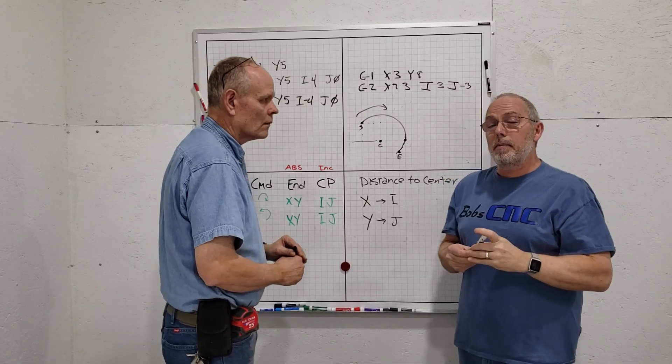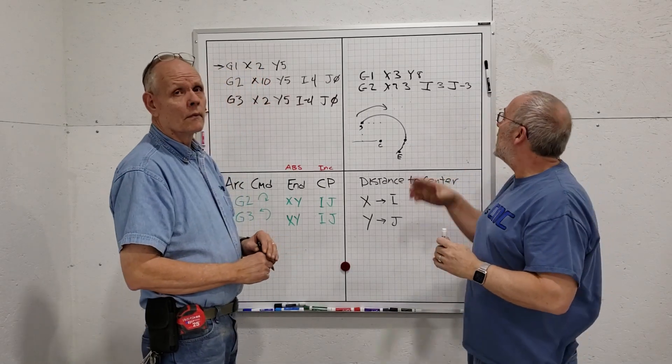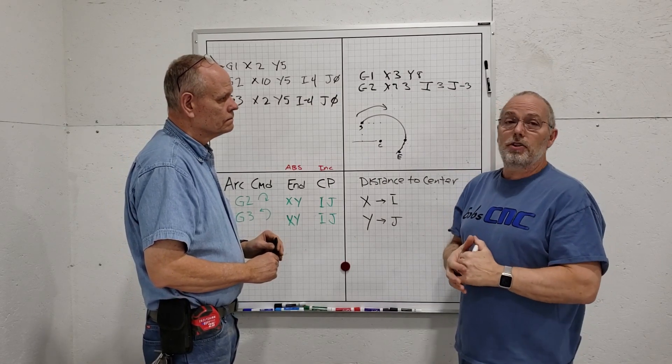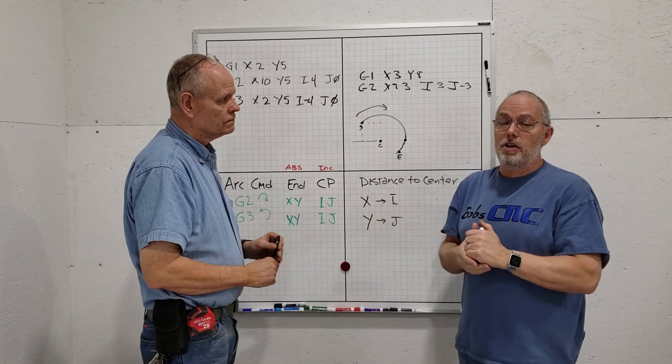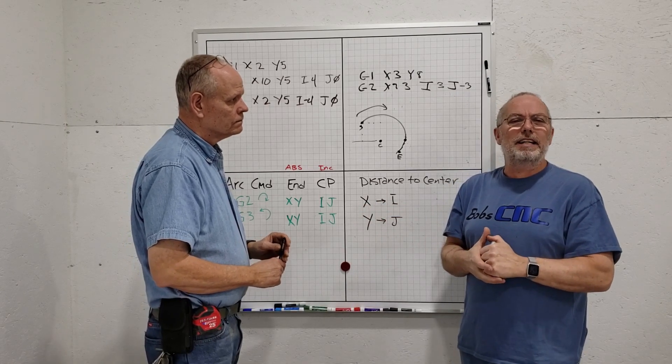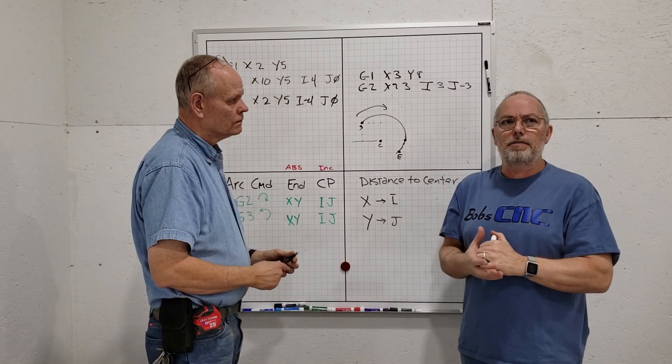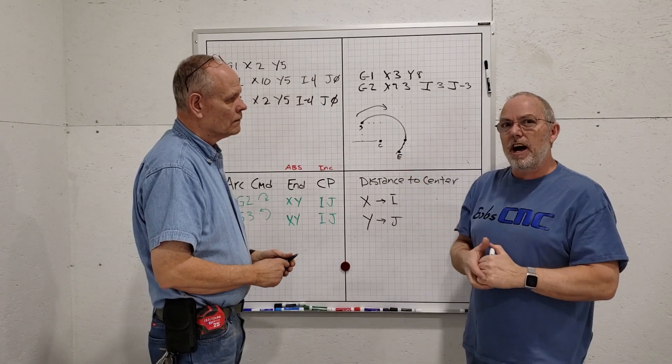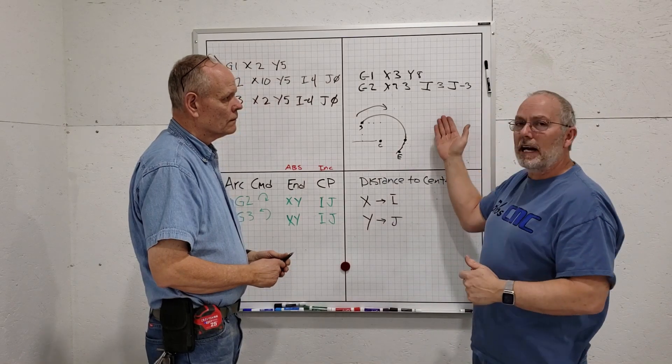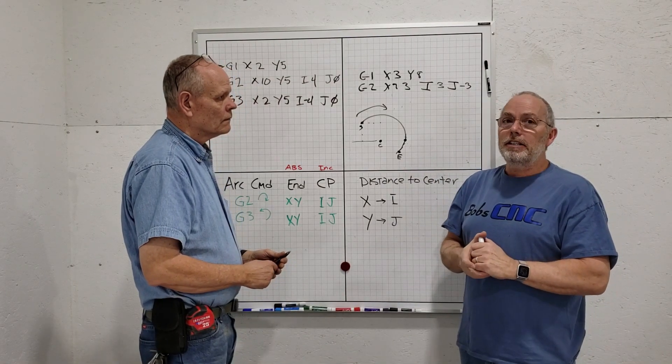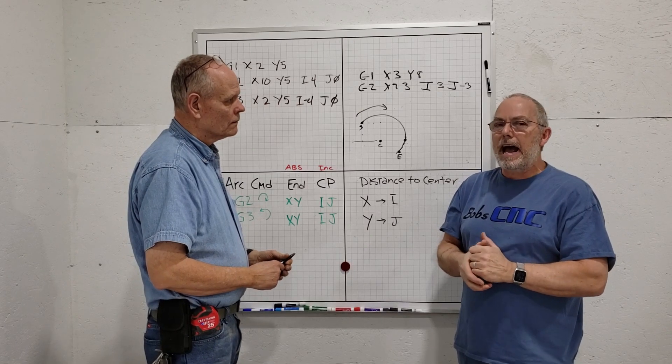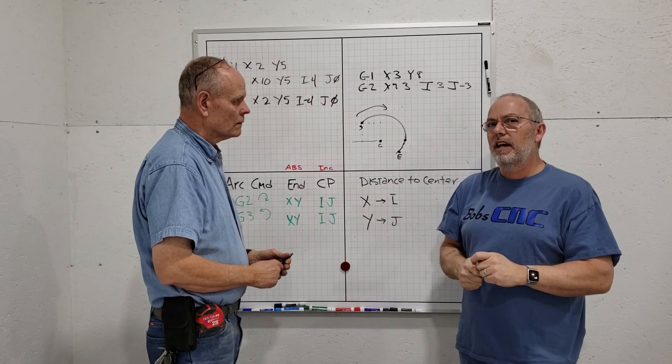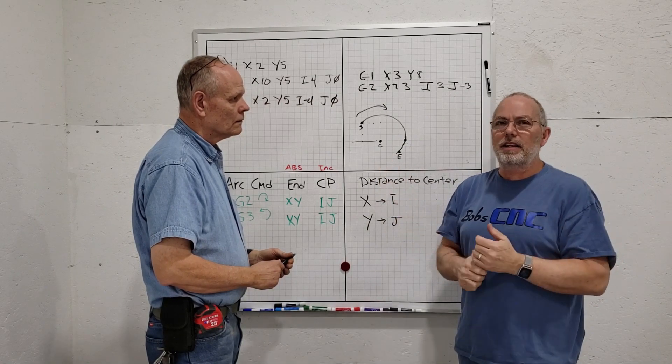Here's what we recommend you do: get a program like NC Viewer, NC Corrector, or any program that will plot your tool path. Just give it a shot. If it doesn't look like a circle, you probably got something wrong. This is one of those commands where it absolutely has to be right. If it cannot figure out where that center point is, it's going to give you an error and nothing's going to work.